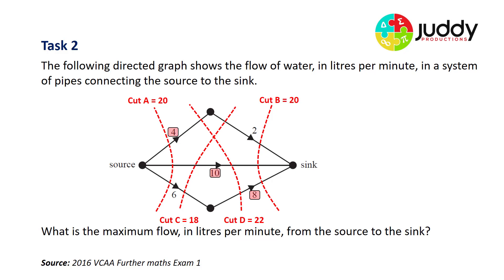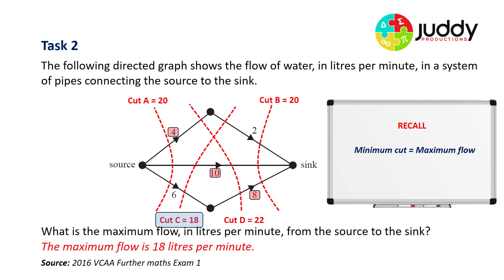So the question is what's the maximum flow in liters per minute from the source to the sink? Maximum flow equals minimum cut and the minimum cut was cut C of 18. So the maximum flow is 18 liters per minute.